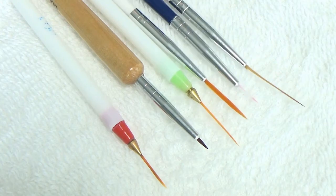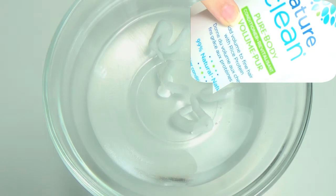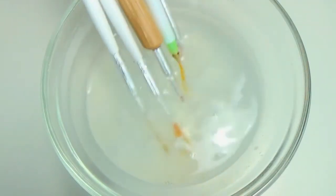Add some conditioner in warm water and mix it well. Then swirl the brushes together for a few minutes. It will make the bristles very soft and not stiff.